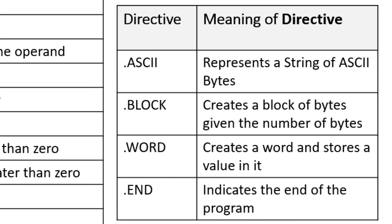In this table, we have the assembler directives and the description of each directive. The .block directive allows us to specify the number of bytes we would like to reserve for a variable or value. The .word directive reserves a space in memory equal to the word length of the computer, usually either 32 or 64 bits. And finally, the .end directive indicates the end of the program.